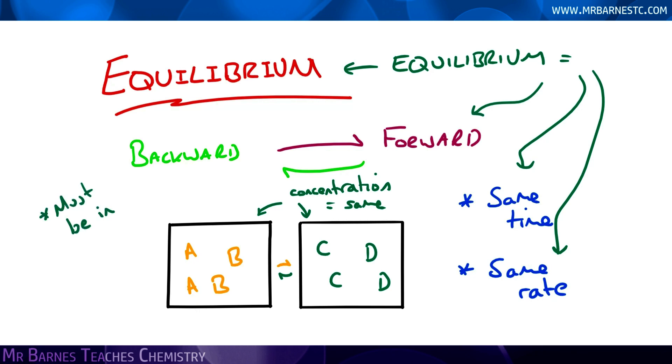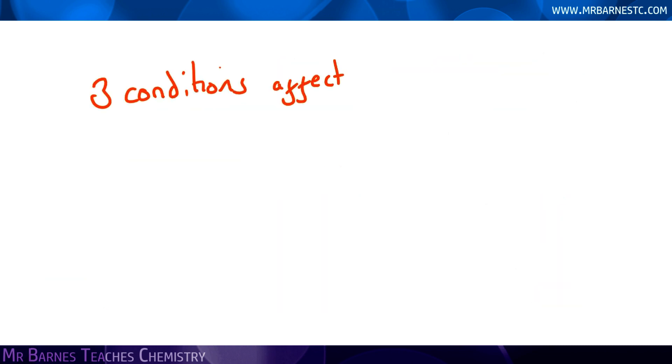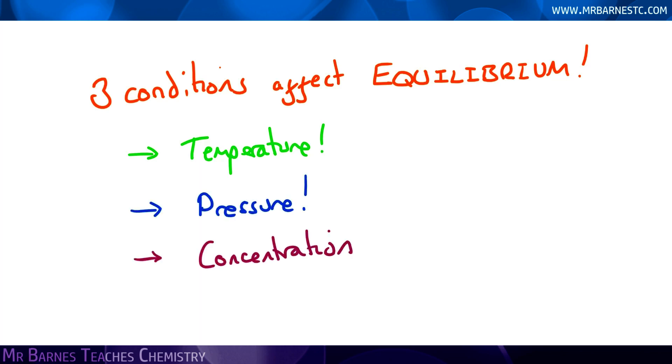Just a couple of things to finish off this video. Number one, for it to be in equilibrium, it must be in a closed system, so none of the products and reactants should be allowed to escape. And secondly, there are three things that can affect equilibrium: the temperature, the pressure, and the concentration. But we'll worry about that in more detail in another video.